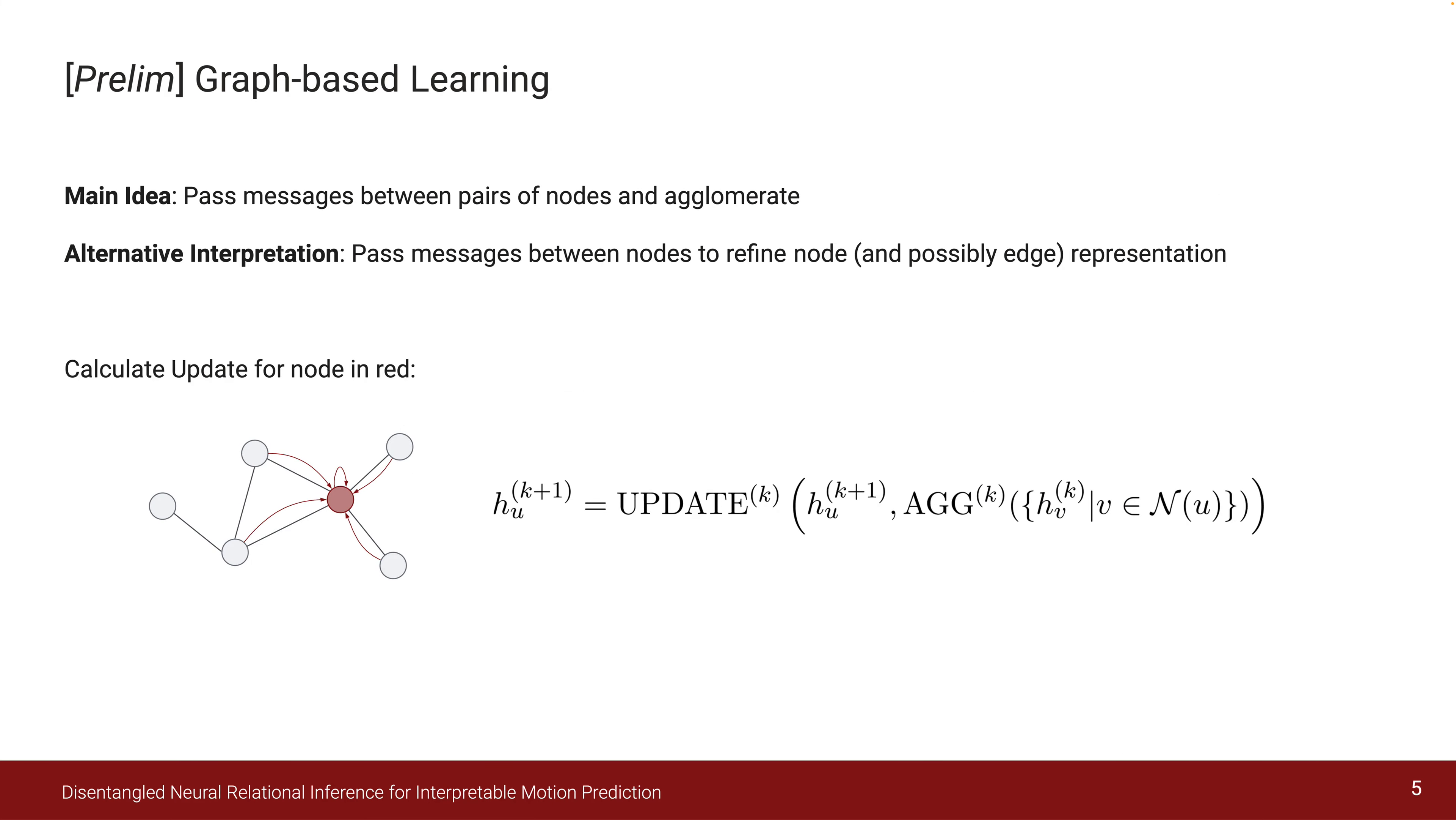Before we dive into technical details, let's review graph neural networks and how they work. During each message passing iteration in a GNN, a hidden embedding h corresponding to node u is updated according to information aggregated from u's graph neighborhood. This message passing update can be expressed as displayed here, where update and aggregate are arbitrary differentiable functions, most commonly MLPs.